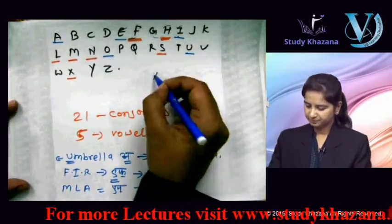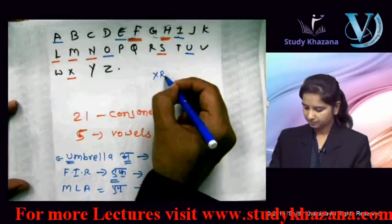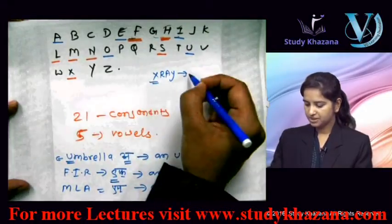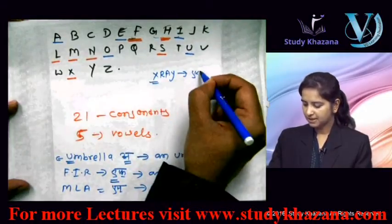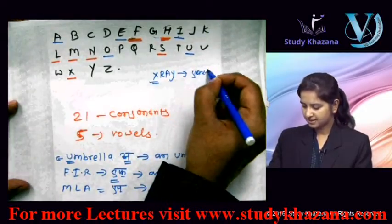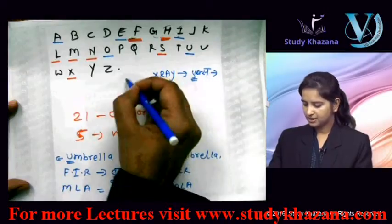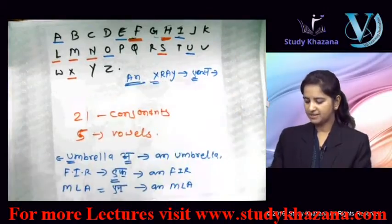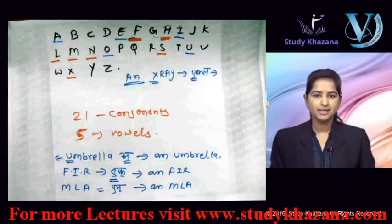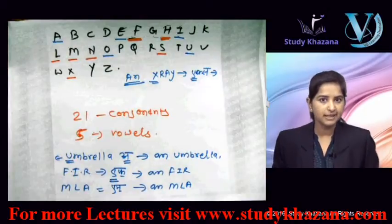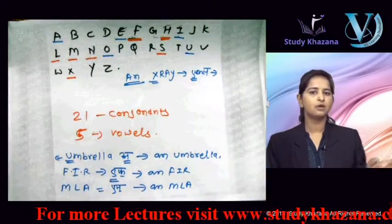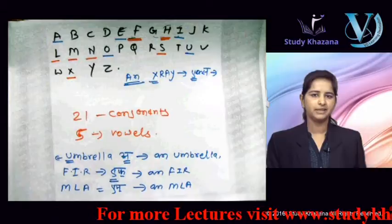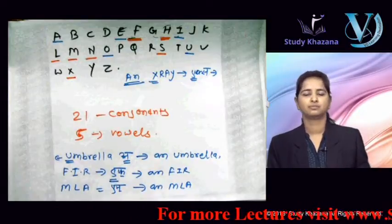X-ray — pronunciation will be 'ex' (vowel sound), aur isliye yeh hoga 'an X-ray.' So guys, I hope this is clear to you that the vowel sound of a word will determine the article used with that noun.